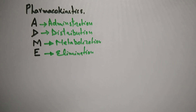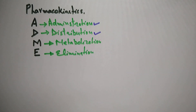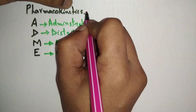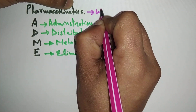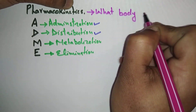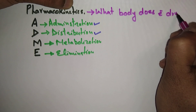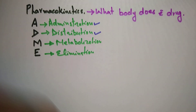And E means elimination of the drug. Today I will try to cover the first two things: administration of the drug and distribution of the drug. The definition of pharmacokinetics is what the body does with the drug. In pharmacokinetics we study ADME — administration, distribution, metabolization, and elimination of the drug.